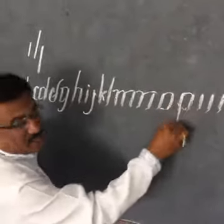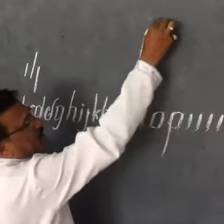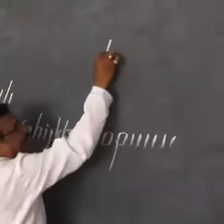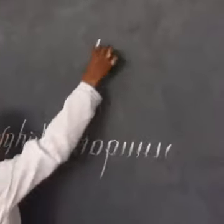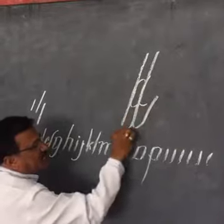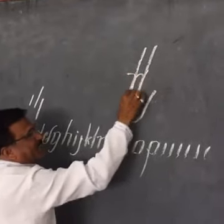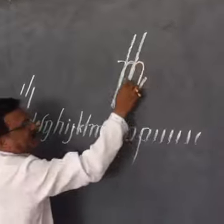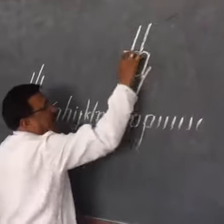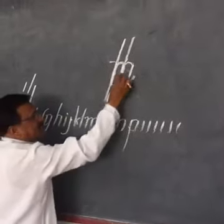We have to get this one. We will get this H. After getting this letter P, it is D, it is P, it is Q, it is G. There is D, this is O, this is N, here is M, this is U, this is W, this is H, here is Y.